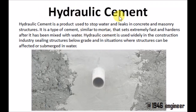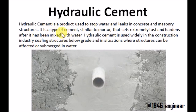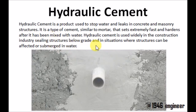So the option we have is hydraulic cement. It is used to stop water leaks from concrete and masonry structures. It sets extremely fast and hardens even in contact with water — that is the special quality of hydraulic cement. It is used in sub-major structures and constructions, and that is how it is different from regular cement.